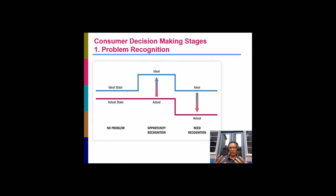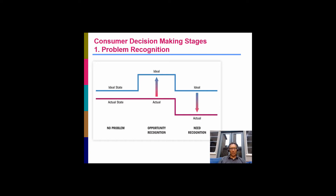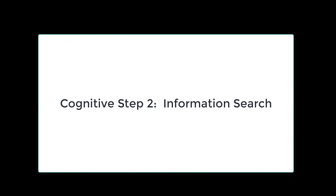In the problem recognition step, the reason we have a problem in the first place is because there's a gap between our actual state — where we're at — and the state that we want to be at. The bigger the gap, the more the drive to solve the problem. We have need recognition when there's a gap between our ideal state and our actual state, and that's what triggers step one — problem recognition.